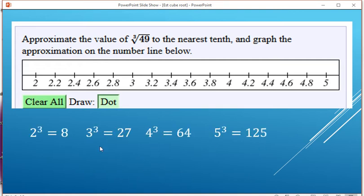We can look at some examples here. 2 to the 3rd power is 8. 3 cubed is 27. 3 4's being multiplied is 64. 3 factors of 5 equals 125.